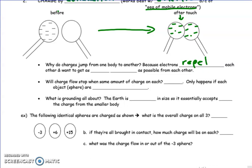So fill in the blanks. Electrons repel each other, wanting to be as far away as possible from each other. Next question, will charge flow stop when the same amount of charge is on each? The answer is, it depends. Not always the case. In other words, we can't always assume that there's going to be equal amount of charge in both spheres. That is only true if each object or sphere are the same surface area. I could put size there, but surface area is the more accurate way of describing that.